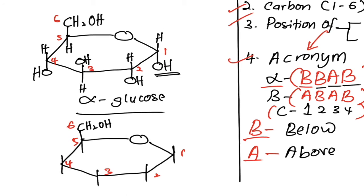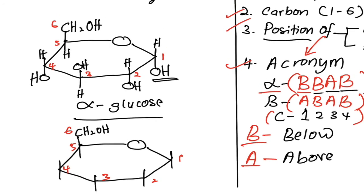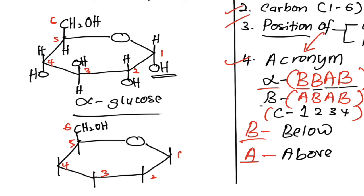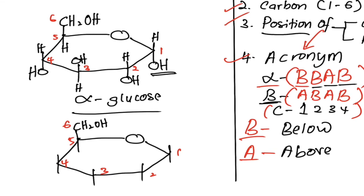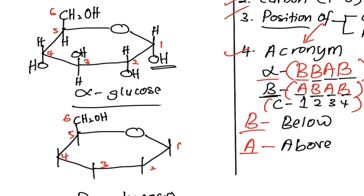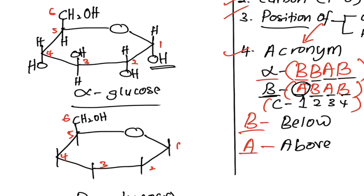Step number three, the position of the hydroxyl group. For beta glucose, the acronym will be ABAB. So carbon number one, hydroxyl group will be A — above the plane of the ring. Carbon number two, B — below the plane of the ring. Carbon number three, above the plane of the ring. Carbon number four, below the plane of the ring.